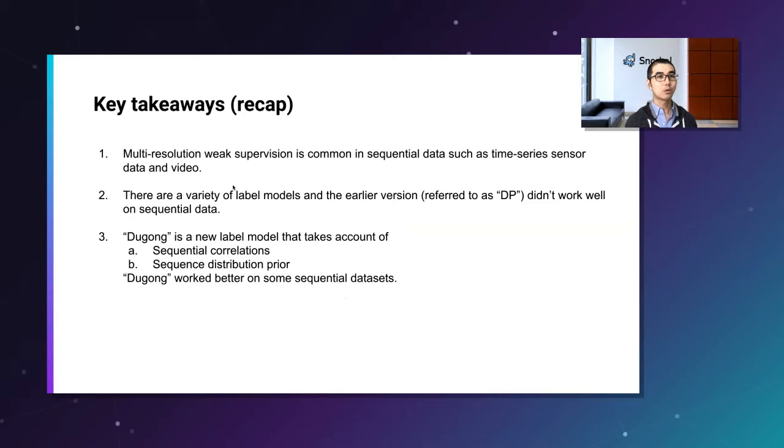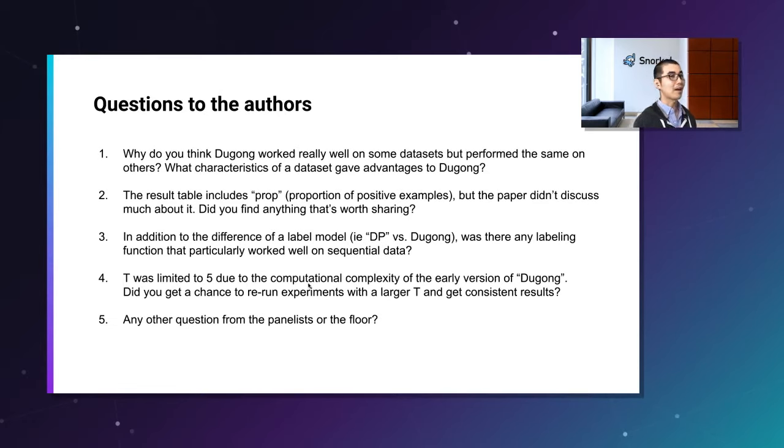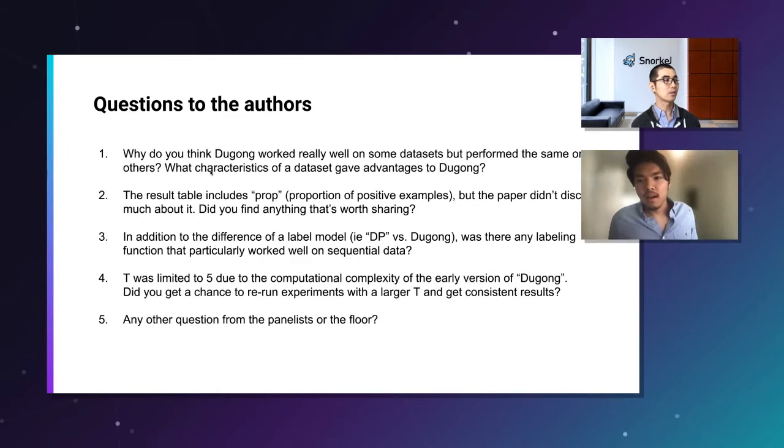So, again, this is the key takeaways. As a recap, multi-resolution weak supervision is common in sequential data such as time-series data and video. There are a variety of label models, and DP is one of them and didn't work on sequential data. And Dugong is yet another new label model that takes account of these two features to work better on sequential data sets. That was basically the end of my presentation. But here we have my questions to the authors in the order of my preference. Like, Mason, how do I start? I can start asking these questions. I guess if Dan or Fred, y'all have anything you want to add at a high level, we're happy to riff on this. And then Hiromu, these are great.